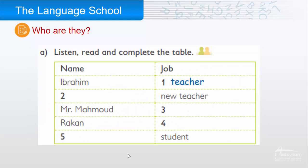Let's read and complete the table. Here we have the names and the jobs. Ibrahim is a teacher. Number two is the new teacher — who is the new teacher? Dave. Mr. Mahmoud — who is Mr. Mahmoud? He is the director.